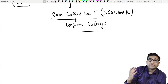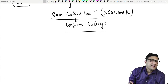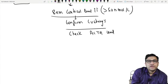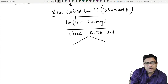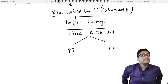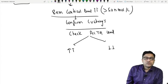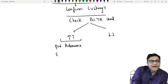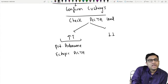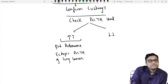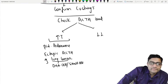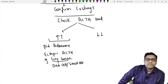Next, to differentiate the cause, we check the ACTH level. If ACTH is high, the problem is not in the adrenal gland — it may be a pituitary adenoma producing too much ACTH, or ectopic ACTH from a tumor such as small cell lung cancer (formerly called oat cell carcinoma), which is a very common source of ectopic ACTH production.